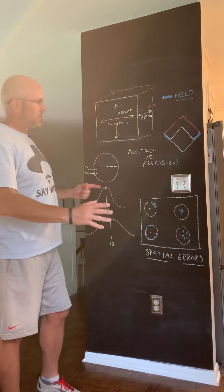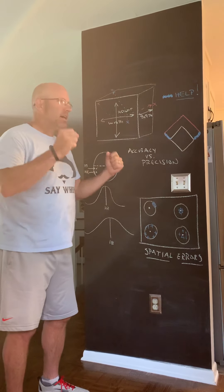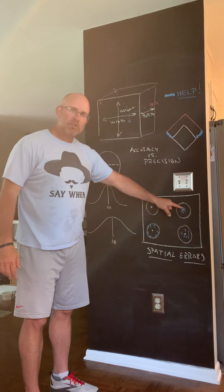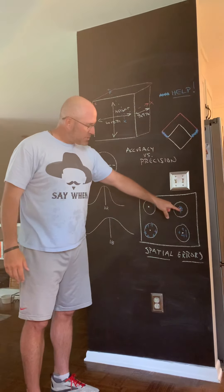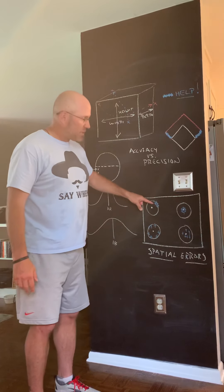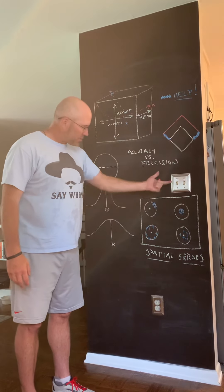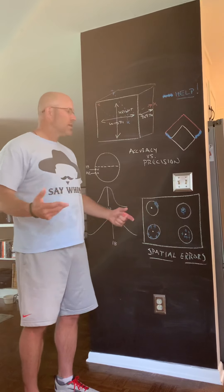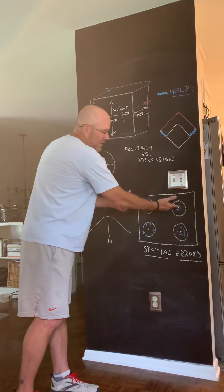I want to talk about the difference between accuracy and precision. At the highest of levels, this is what great hitters look like: here's your target and they're missing ever so slightly around that middle. If you go to batting practice at the big leagues or even college, the ball flight is so consistent because their impact position is so close to optimal — that's what precision looks like. But the problem with precision is when you are precisely off. High-level hitters can take this very precise cluster and go through ruts where they get the same swing and miss over and over — they're precise, but precisely off.